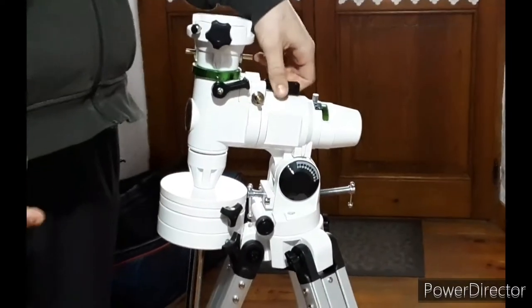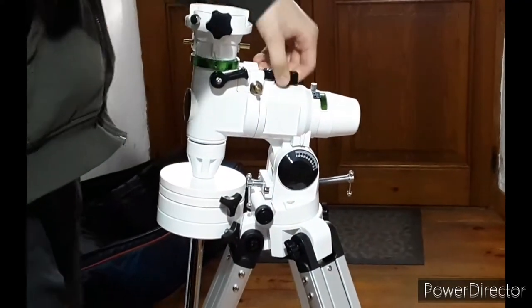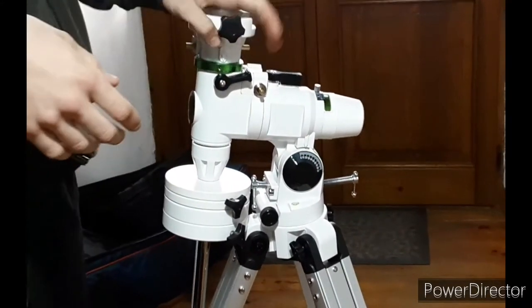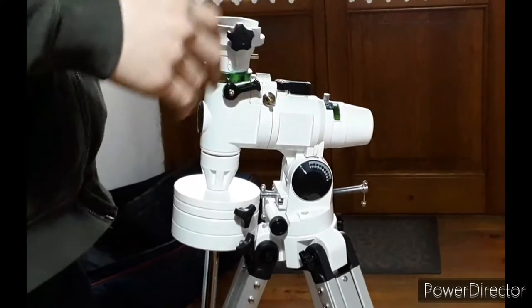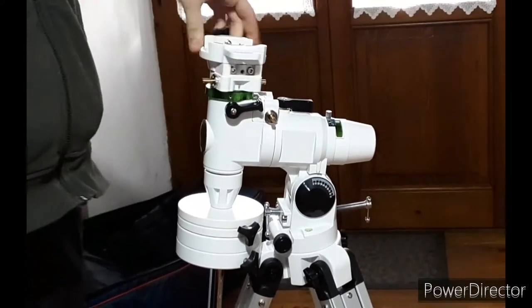The altazimuth is the other one. It goes from north to south and east to west, so it's more difficult to follow objects in the night sky. And the catadioptric one is a mix between them, so it's more expensive and difficult to find.